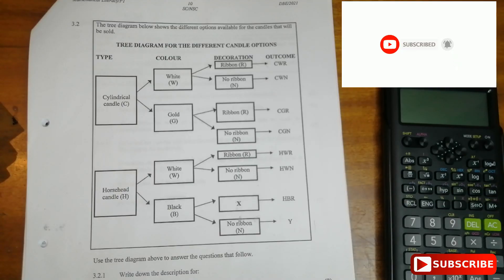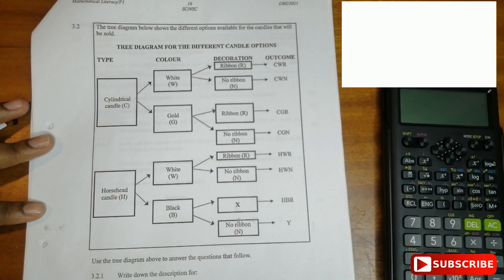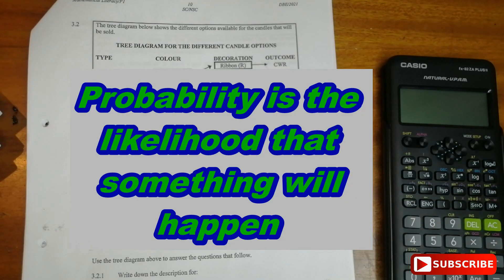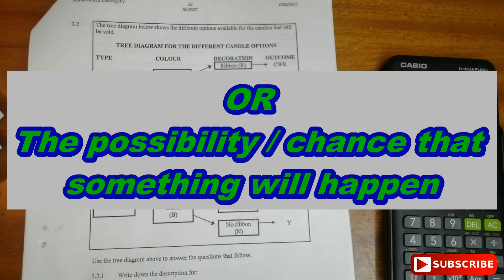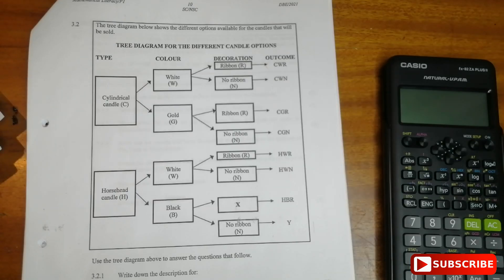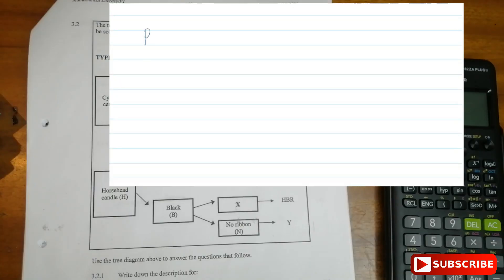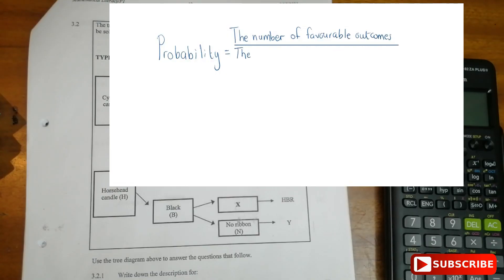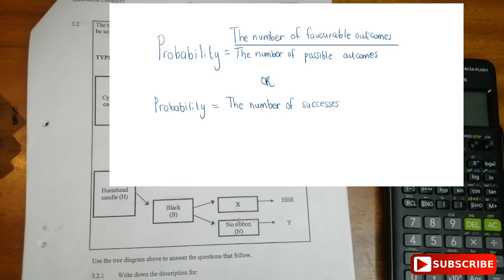So what is probability? Probability is the likelihood that something will happen. There is a formula used to calculate the probability of something happening. In mathematical terms, probability is equal to the number of favorable outcomes — the outcomes that you want or are asked for — divided by the number of possible outcomes, which is the total possible outcomes you are given.